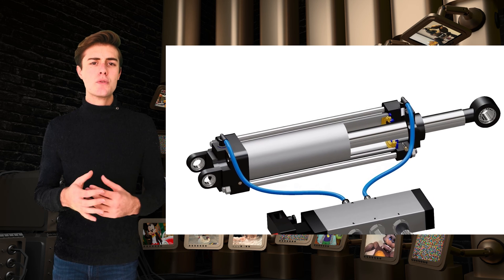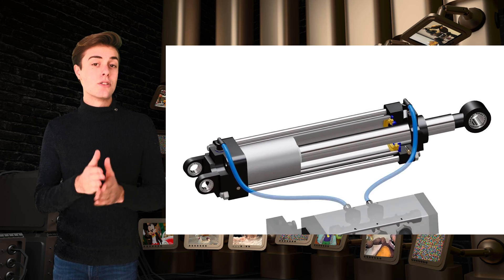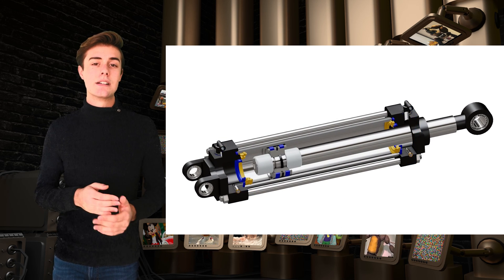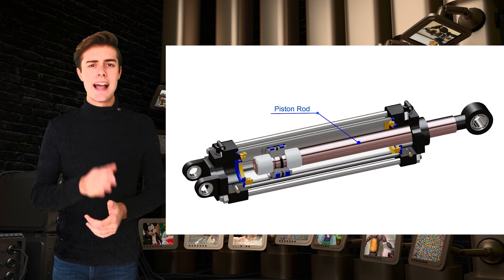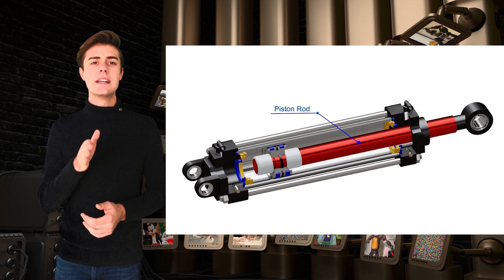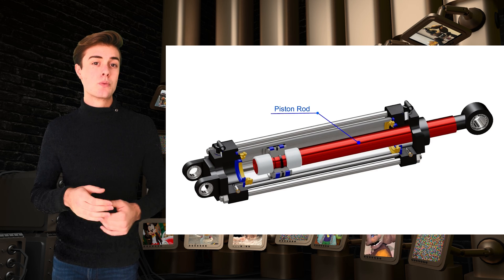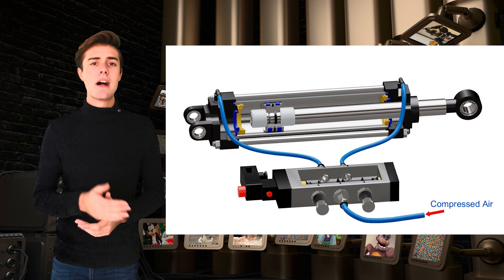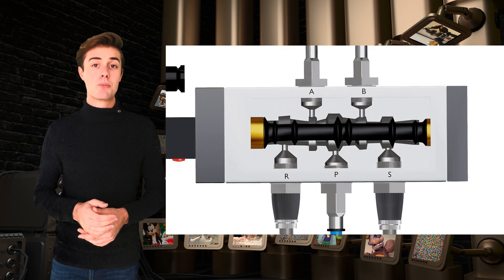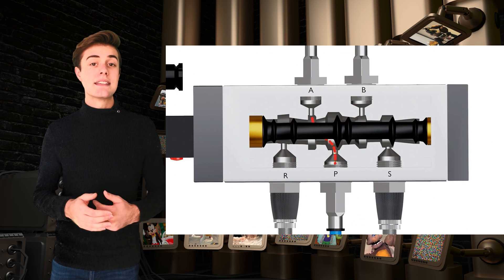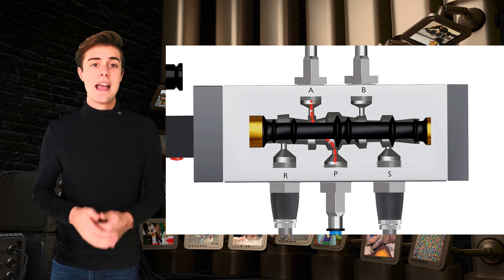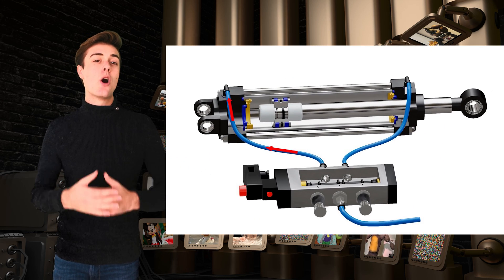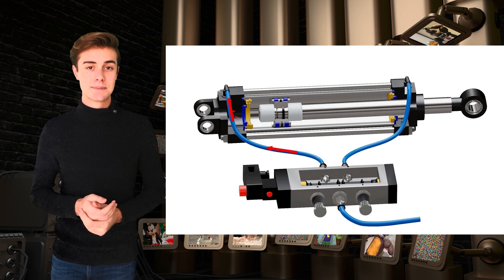Pneumatic cylinders are basically tubes that have a seal in the middle. This creates two different air cavities where air can flow in and out. Attached to this seal is a rod, which outputs the motion of the seal. A solenoid valve is used to divert the air from the compressor to either side of the piston, and when one side is pressurized, the rod moves in the opposite direction, creating movement.